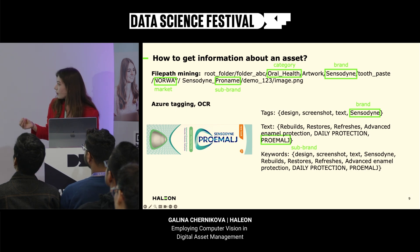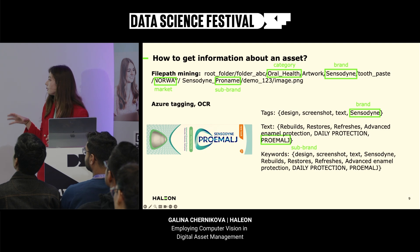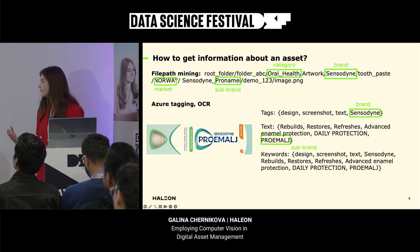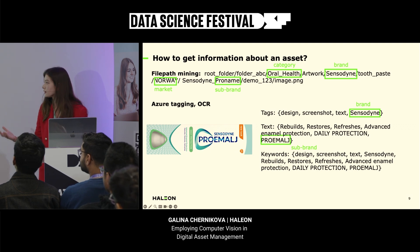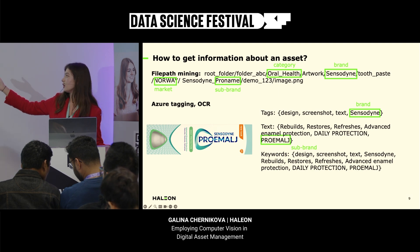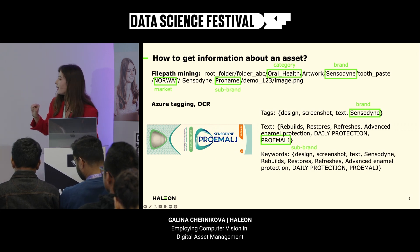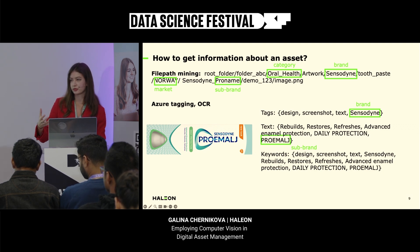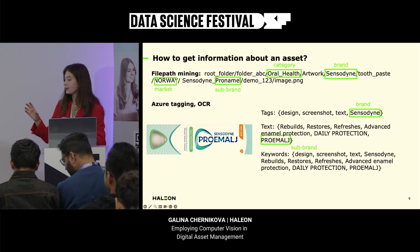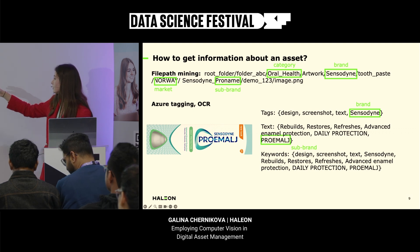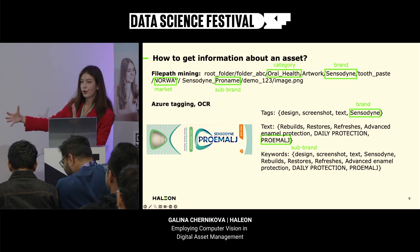From the image, we can extract information by passing the digital asset to Azure Cognitive Services. Azure Cognitive Services uses a neural network to extract tags — a description of the image. For this specific pack shot, we got tags: design, screenshot, text, and Sensodyne. When we have the tag 'text', we then use OCR — optical character recognition — to extract all the words we can find in this image. In this example, we managed to extract tags: 'rebuilds', 'restores', 'daily protection', 'Pronamel'. We combine these tags and text to get our keywords.